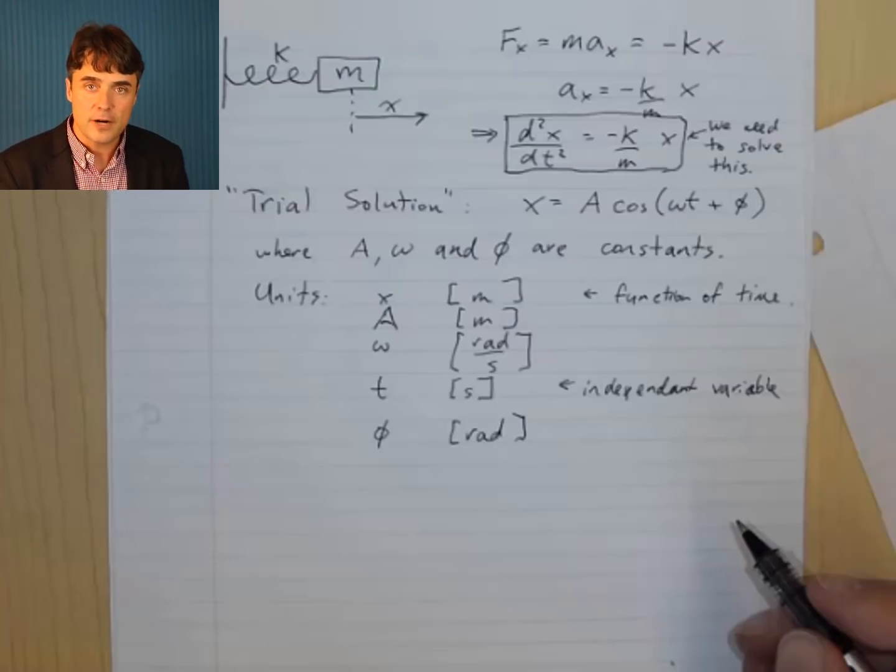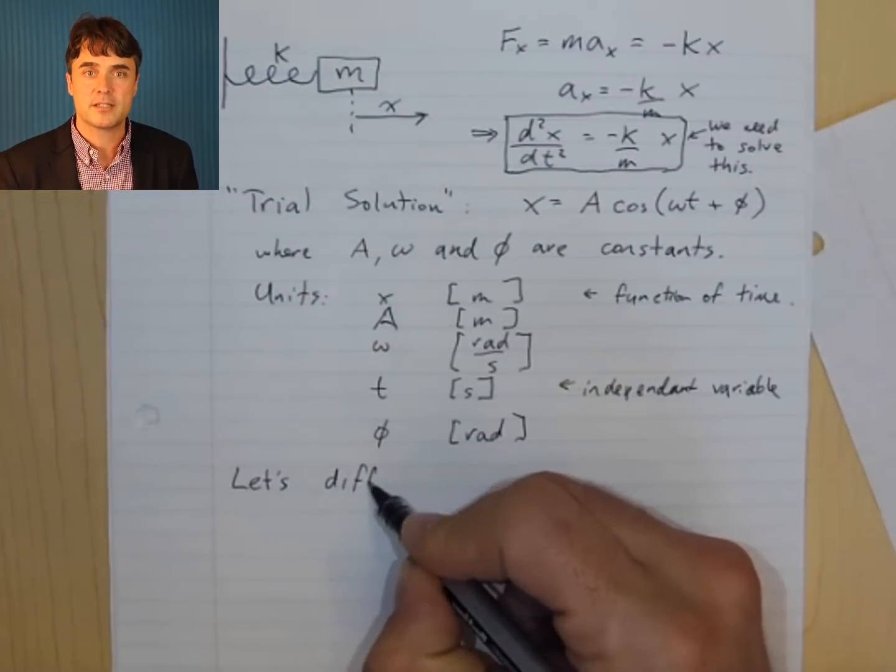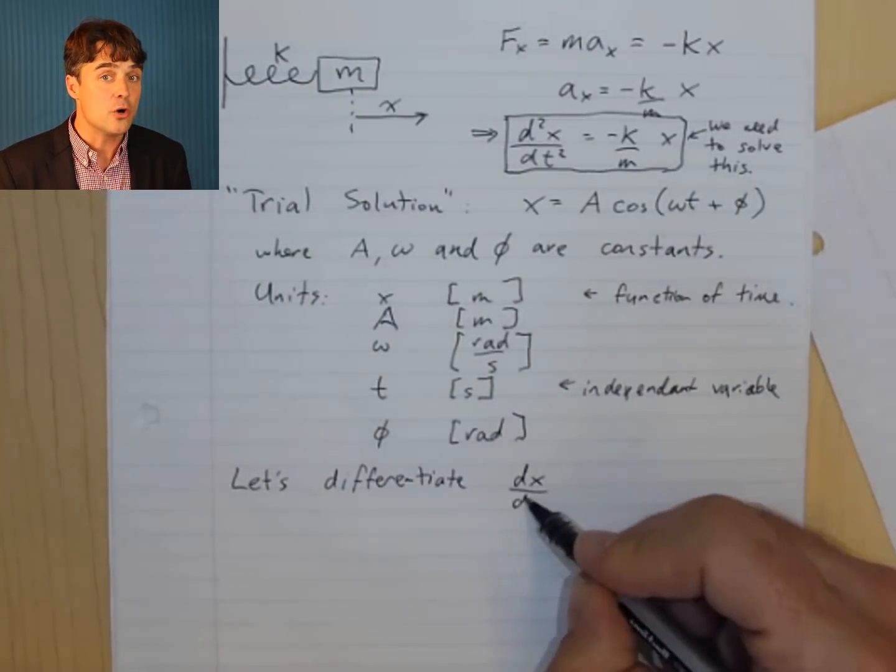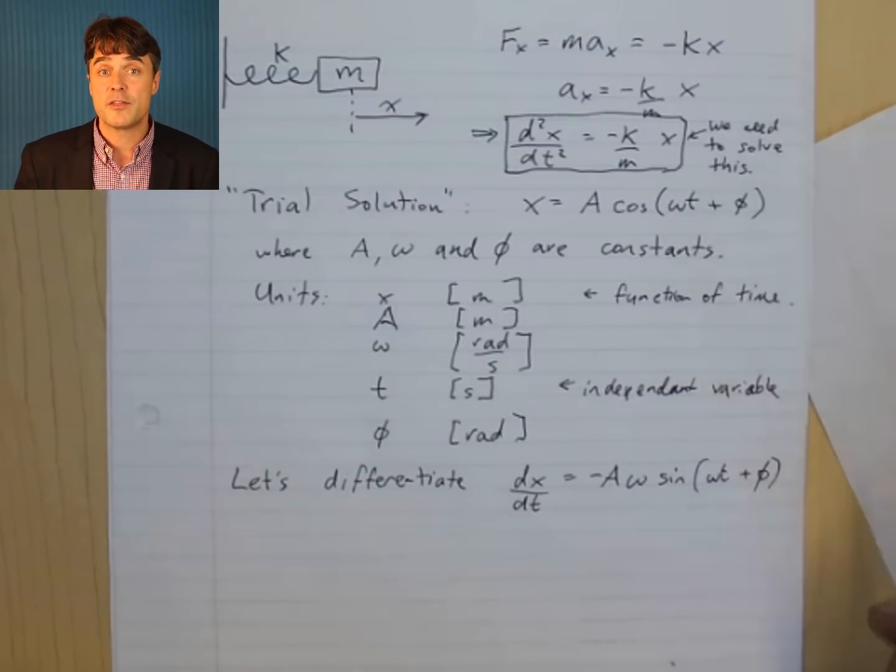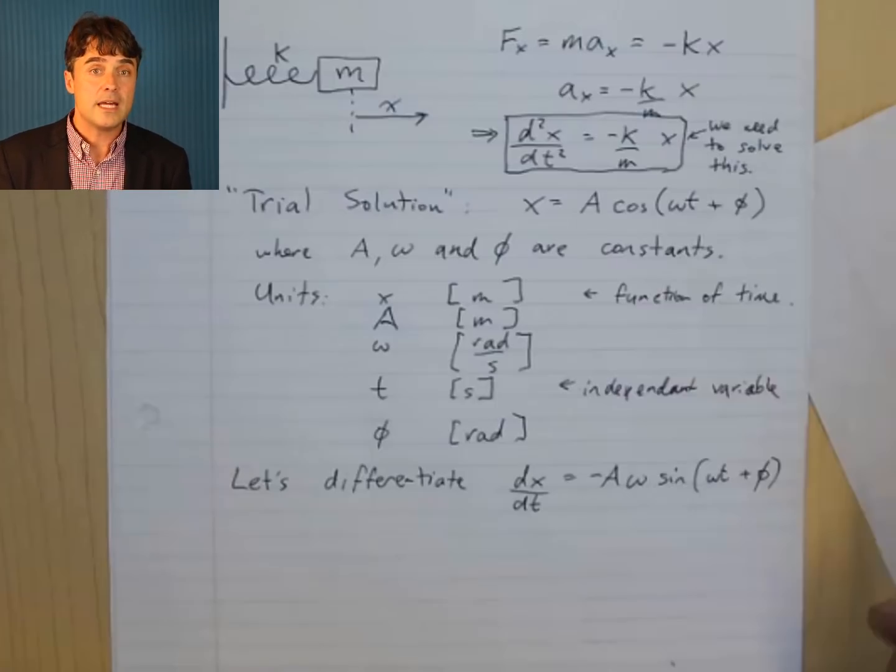So, let's differentiate the trial solution with respect to time. You might know that the derivative of cosine is negative sine, and by the chain rule, the omega in front of the time comes out in front of the derivative. So, we have dx by dt equals negative A times omega times sine of omega t plus phi.